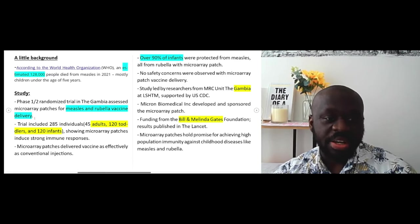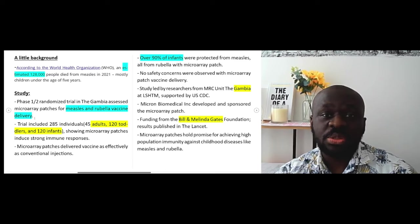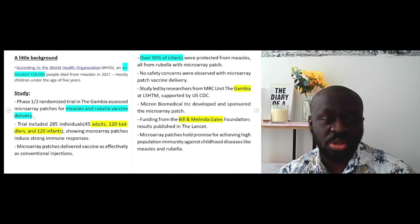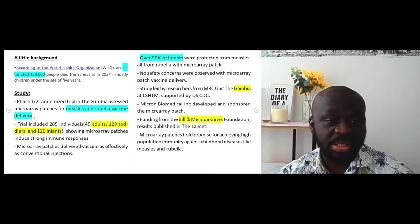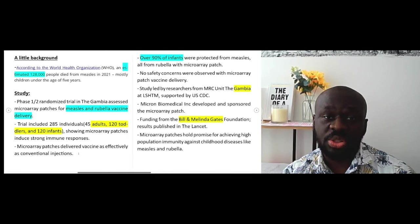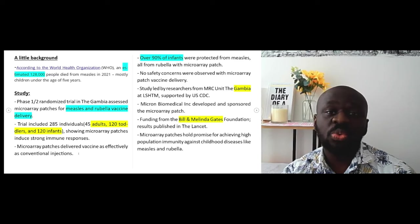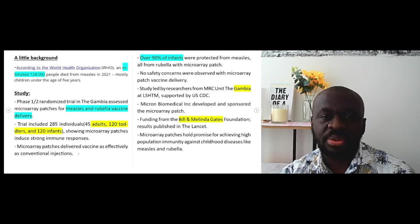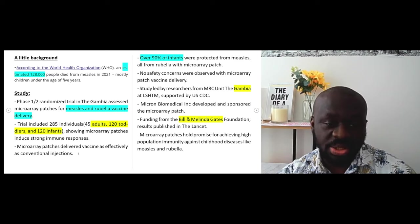And this trial in The Gambia was conducted on 285 individuals or subjects, 45 adults, 120 toddlers and 120 infants. I haven't written it here, but when I looked into the methodology, it was patients or individuals who were healthy. So anyone who was malnourished, for instance, who suffered malnourishment or malnutrition, or they were acutely unwell or chronically unwell, they were not included in this study.